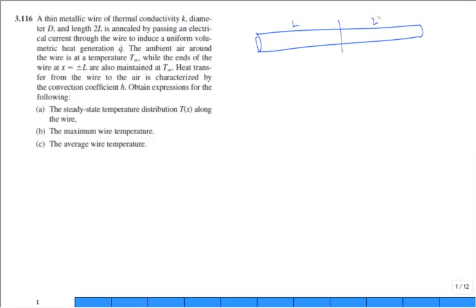It's 2L length. It's annealed by passing electric current through the wire to induce a volumetric heat generation. Isn't this our symbol, Q dot, for the volumetric heat generation? What are the units on Q dot? Watts per meter cubed. The ambient air around the wire is at a temperature T infinity, and the ends of the wire at plus and minus L are at the temperature T infinity as well.